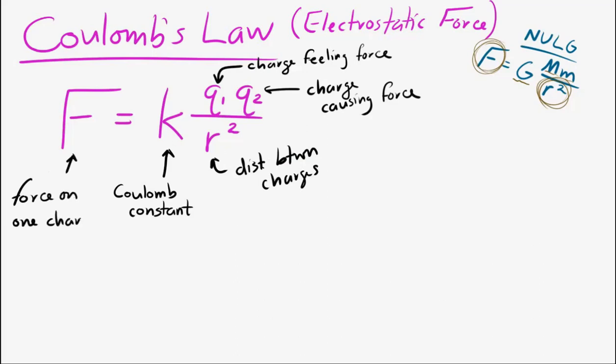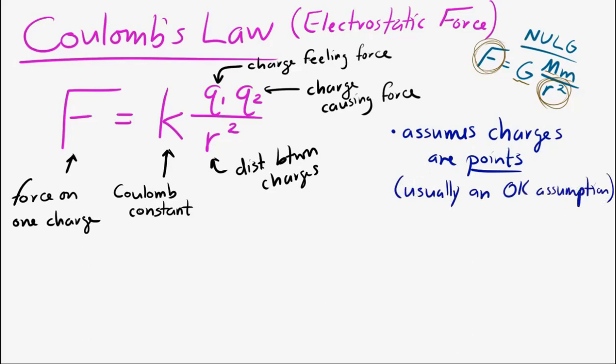Now, this equation assumes something that's pretty important. It assumes that the charges are points, not spheres or cubes. Usually that's fine. The Coulomb constant k is 9 times 10 to the 9 Newton meters squared per Coulomb squared.